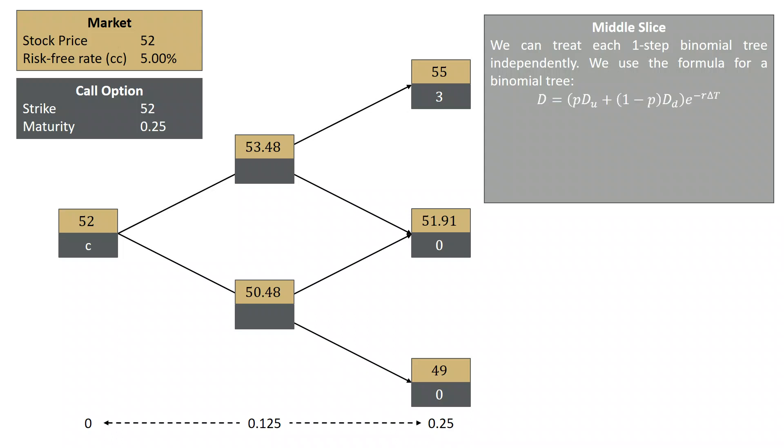Now we know the value of the derivative is P times DU plus 1 minus P times DD, e to the minus R delta T. We know the value of P: 0.6165, or 61.65%.